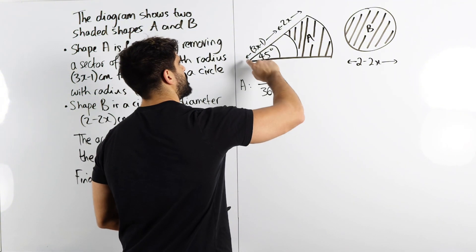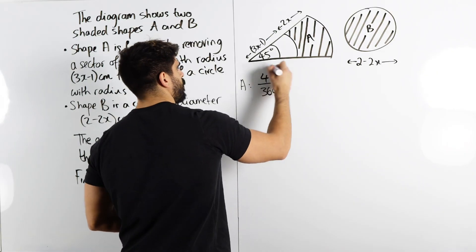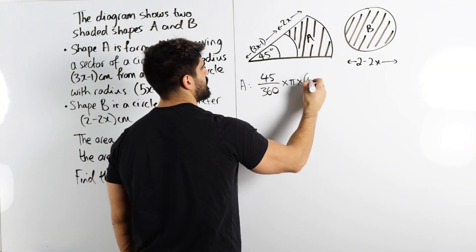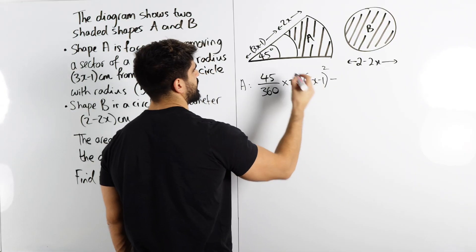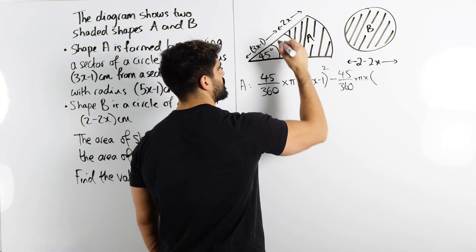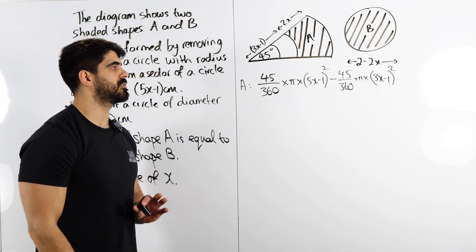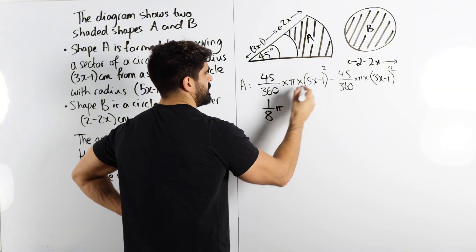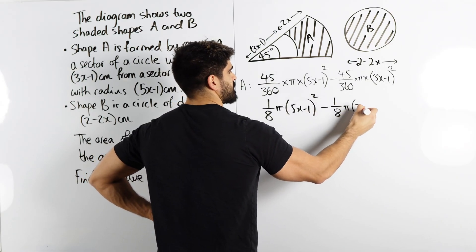To work out area A we're going to take the big sector area minus the smaller one. We've already said what fraction of the full circle it is, so we now multiply by pi r squared. That's pi times the big radius, (5x minus 1) squared, and from that we subtract the same thing for the smaller circle: 45 over 360 times pi times (3x minus 1) squared. We can write this as one eighth pi times (5x minus 1) squared minus one eighth pi times (3x minus 1) squared.